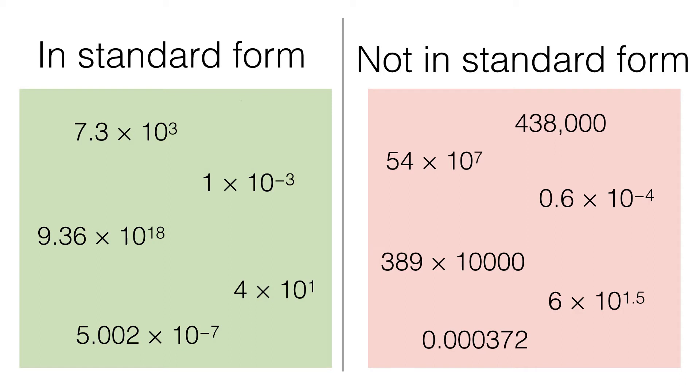Here are some examples and non-examples for you. All the numbers on the left are in standard form. They all have the form a times 10 to the power of n, and I'll repeat, n has to be an integer and a has to be at least 1 but less than 10. So just to be clear, this a doesn't have to be an integer. We can have something like 7.3 or 9.36 or 5.002. n has to be an integer, but that can be positive or negative.